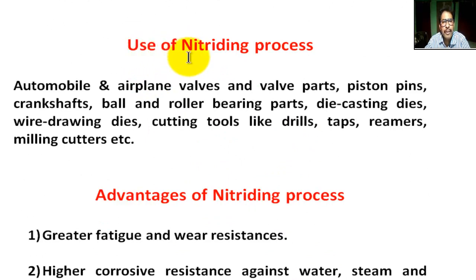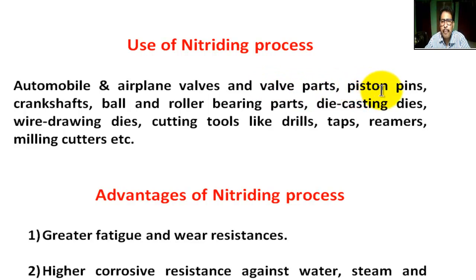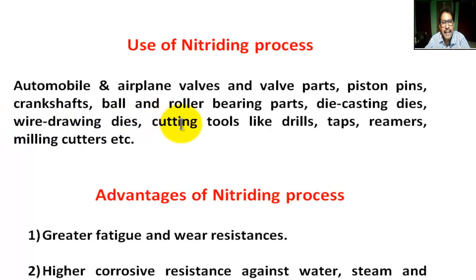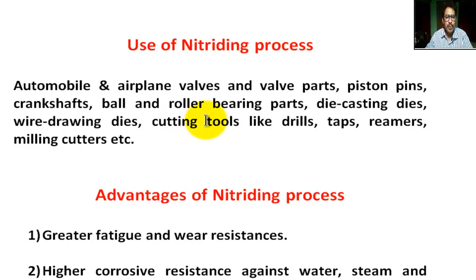Use of nitriding surface hardening process: it is used in automobile and airplane valves and valve parts, piston pins, camshaft, balls and roller bearing parts, die casting dies, wire drawing dies, cutting tools such as taps, reamers, milling cutters, etc. For this purpose nitriding is used.